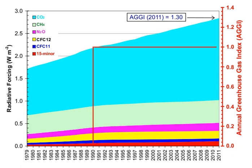A greenhouse gas is a gas that absorbs and emits radiant energy within the thermal infrared range. Greenhouse gases cause the greenhouse effect. The primary greenhouse gases in Earth's atmosphere are water vapor, carbon dioxide, methane, nitrous oxide, and ozone.